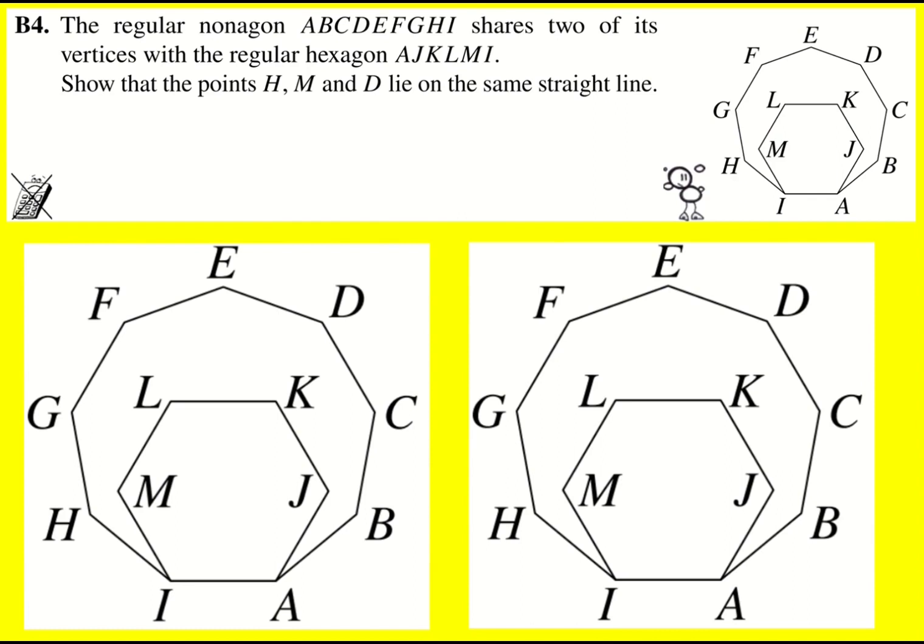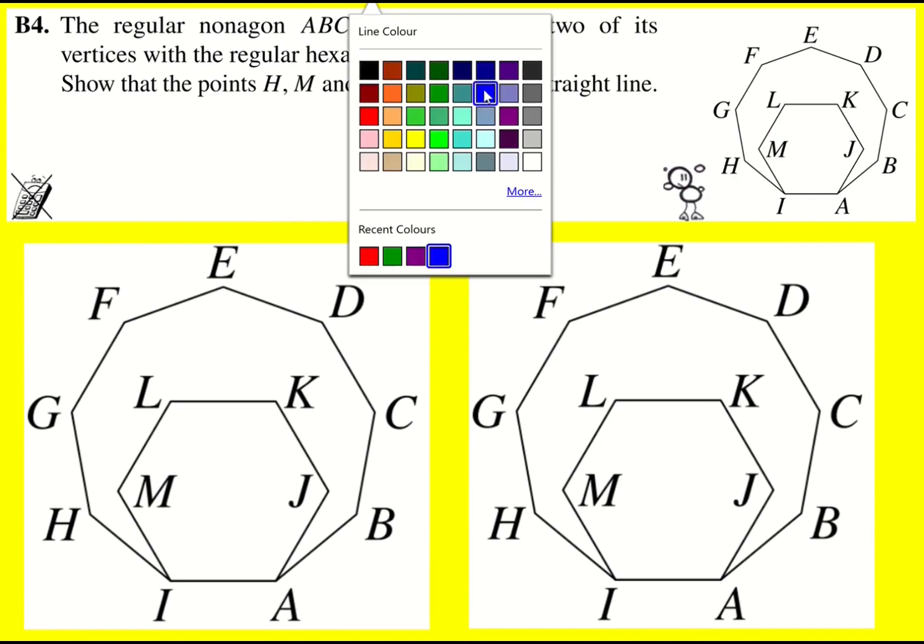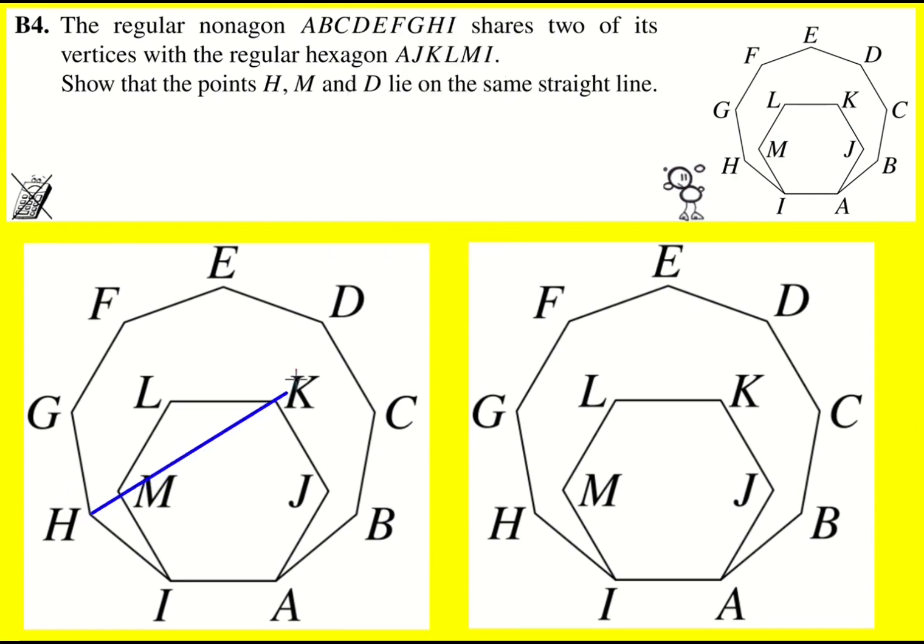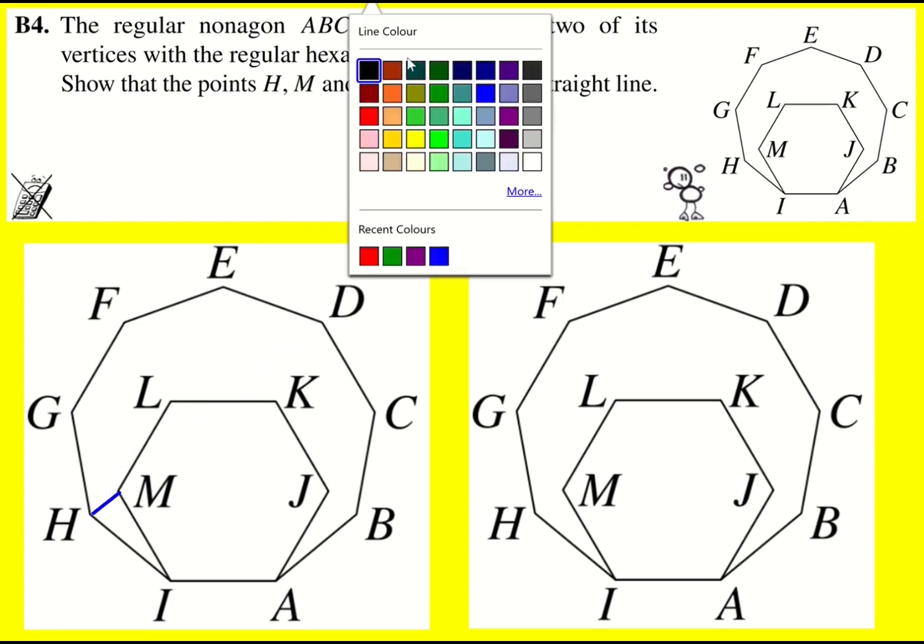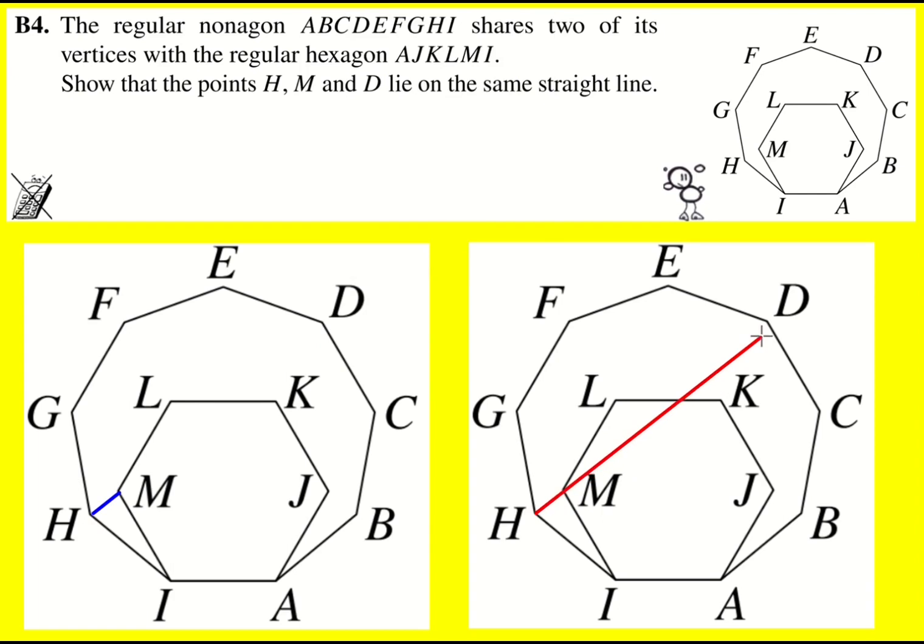Now my initial thoughts for this problem were to try to show that angle HMD was 180 degrees and that's going to be my second method. It felt more intuitive but it actually turns out to be a bit messier than the alternative way. So the slightly less obvious way but actually turns out to be easier is to find angle MHI and find angle DHI and show they are the same.